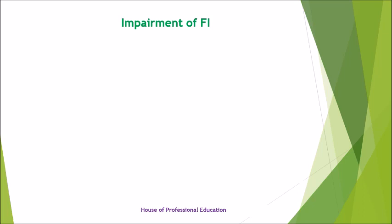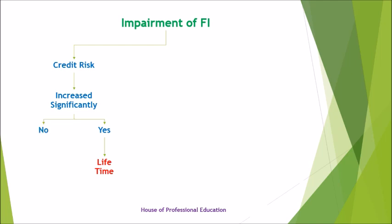Measurement of financial instruments can be segregated into four categories. Number one is credit risk, where we need to consider at each reporting date whether or not the credit risk has significantly increased since initial recognition. If the credit risk is increasing significantly, then an entity shall measure the loss allowance for the financial instrument at an amount equal to lifetime expected credit losses. But if not, then an entity shall measure the loss allowance at an amount equal to 12-month expected credit losses.